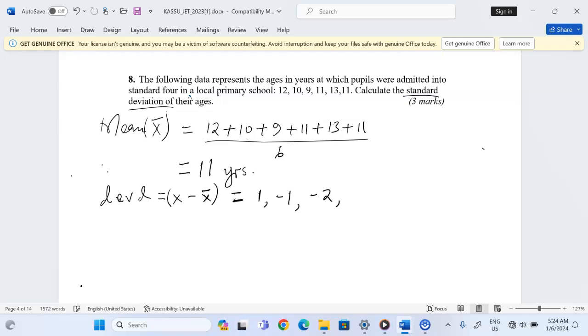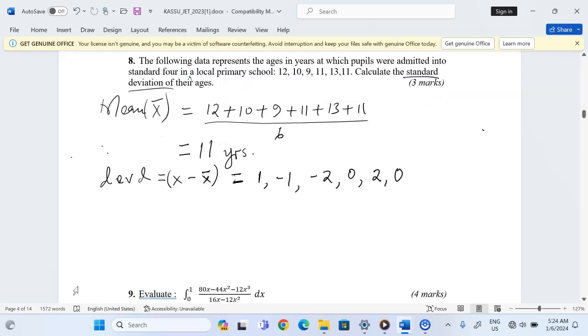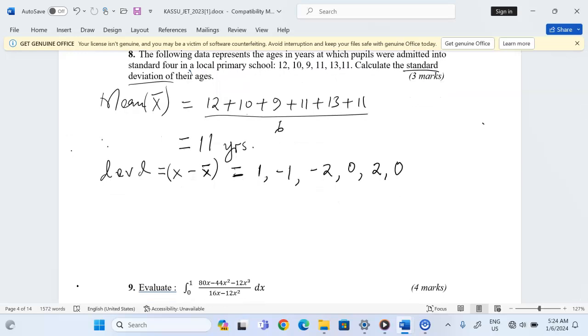11 minus the mean gives zero. 13 minus the mean gives 2. 11 minus the mean gives zero. We take every value and subtract it from the mean. After getting the deviations...